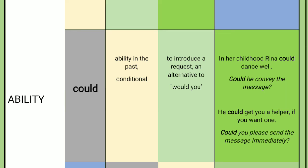Could is also used to introduce a request, as an alternative to 'would you.' Examples: 'Could he convey the message?' 'I could get you a helper if you want.' 'Could you please send the message immediately?' So could is the past tense of can and is used in introducing a request.